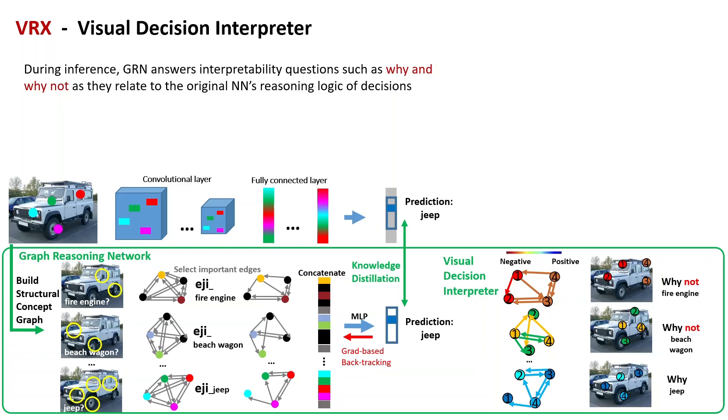During inference, we propose gradient-based backtracking to assign contribution scores to each node and edge, which means how much contribution does this node or edge provide for the final decision. This provides clear evidence to show the reasoning logic of the original model.